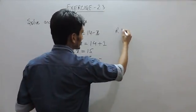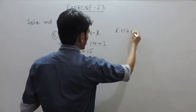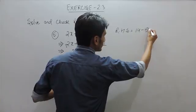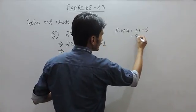So right hand side is actually 14 minus x, and we know that the value of x is 5. So right hand side is 9.